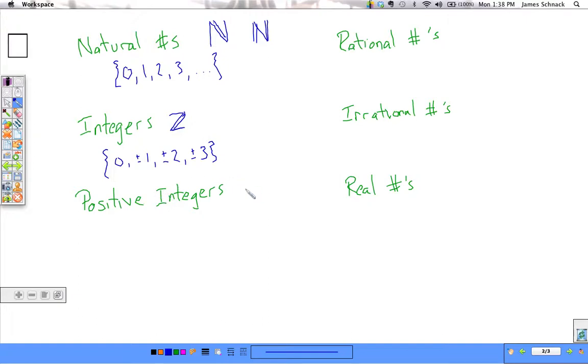The positive integers, we can give a special symbol to that. If we use Z with a superscript of a plus, we're saying we only want the positive integers. And, well, that's really the same thing as the natural numbers.